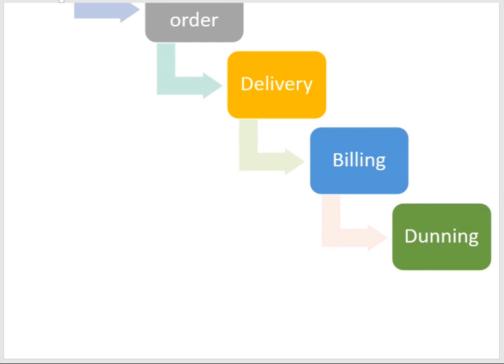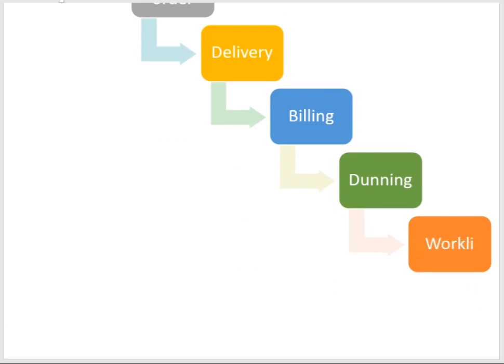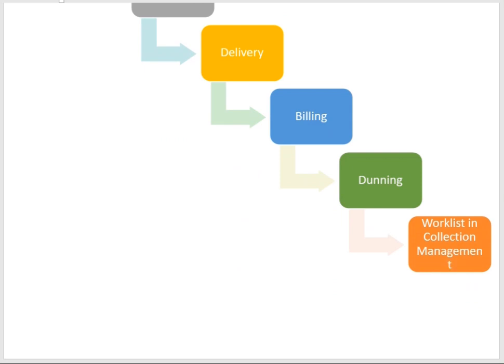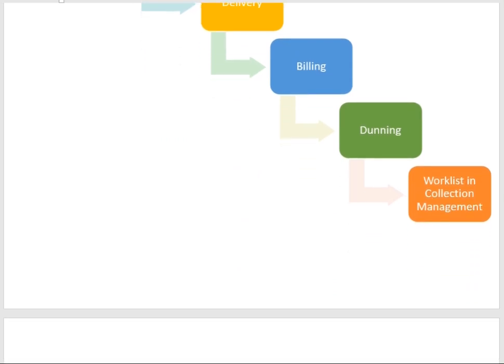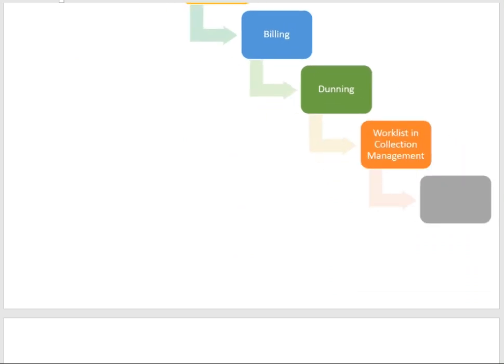If the customer is still not paying the overdue invoice amount, the process is passed to the Collection Department, which is ultimately responsible for collection. A work list will be generated in Collection Management, integrated with Accounts Receivable, so AR invoices appear in the work list. The work list analyzes customers by their credit ratings and credit risk — if the credit risk is high and there is a high chance of customer default, that customer will have priority in the work list.